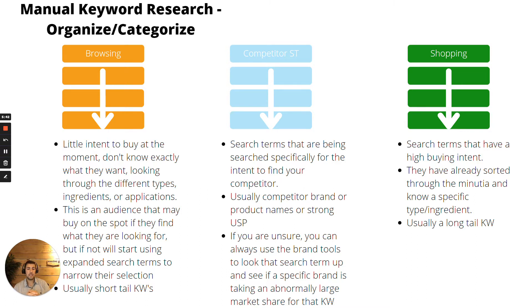Competitor search terms are ones being searched specifically for a competitor. Sometimes you don't realize they are until you click the link and see it's actually a product name or brand name. One way I check: if I have access to brand tools, I look up that specific keyword and check the conversion pool. If one brand has an outrageous share of conversions for that search term, it's a branded competitor keyword — even if it seems broad.